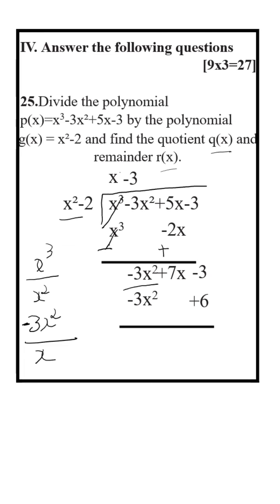Now change the sign of the second number. Minus 3x square and plus 3x square get cancelled. Bring 7x down. Minus 3 minus 6, that is equal to minus 9.